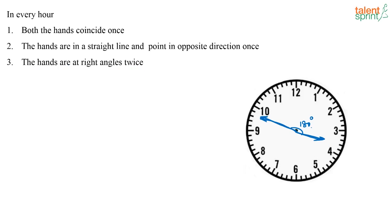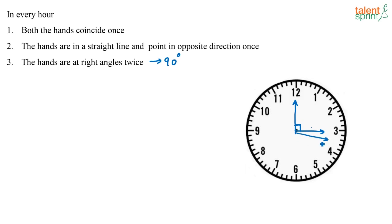The hands are at right angles — that is, perpendicular to each other with a 90-degree angle between them — twice in every hour. For example, from 3 o'clock to 4 o'clock: at 3 o'clock itself the hands are already perpendicular, and then somewhere around 3:35 the hour hand and minute hand form a right angle again. So in every hour, the hands are at right angles twice, in a straight line once, and coincide once. These are basic facts to keep in mind as questions are often based on them.